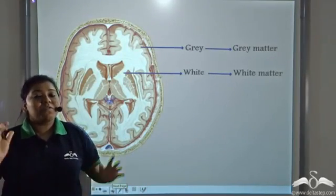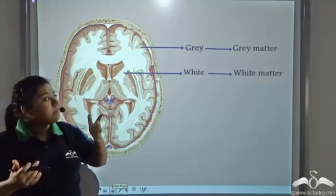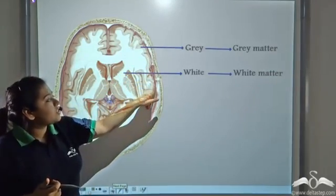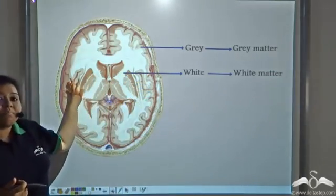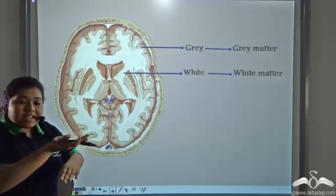Brain consists of an outer grey matter. It is greyish in colour. This is a picture of the brain, sliced from the top.